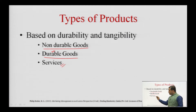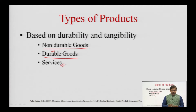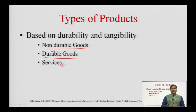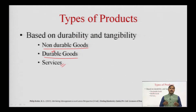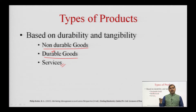The last category under this classification is services. Services are intangible, inseparable, perishable, and normally require more quality control. An example is a haircut at a barber shop, or legal advice from an advocate — these are services provided to clients.